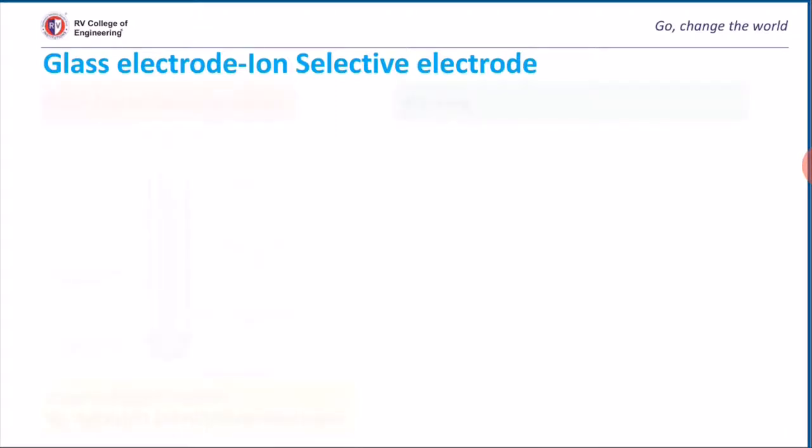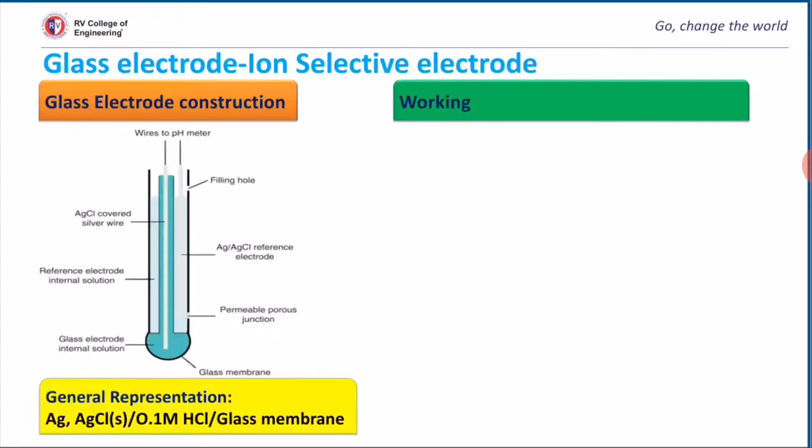This glass electrode, whenever not in use, must be dipped in either HCl solution or distilled water. By convention, glass electrode is rendered as cathode. The glass electrode is not a reference electrode.